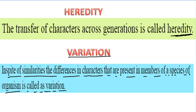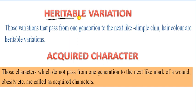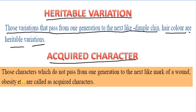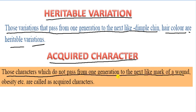Now the next definition is heritable variation. What is heritable variation? Those variations that pass from one generation to the next, like dimple, hair color, are heritable variations. Now come to acquired characters. What is an acquired character? Those characters which do not pass from one generation to the next, like mark of wound, obesity, etc., are called acquired characters.